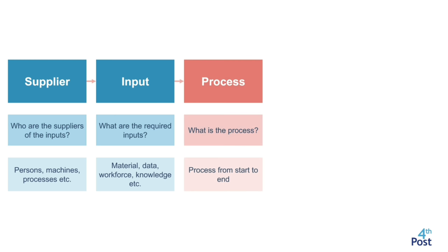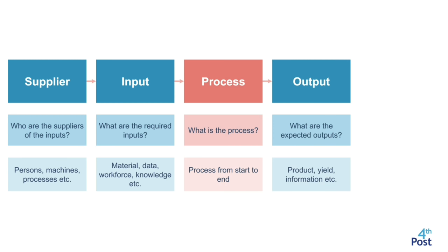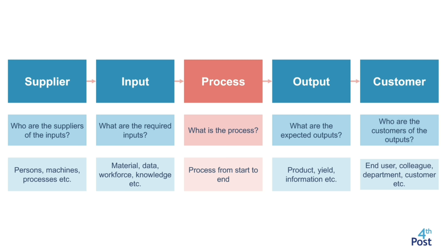In the Process column, we identify the different processes within the work system from the beginning to the end. In the Output column, we identify the expected output of each process step — product, yield, information, service, knowledge, material, etc. And in the Customer column, we identify who the different customers are for each output. This could be the end user, colleagues, other departments, customers, or maybe another business, etc.